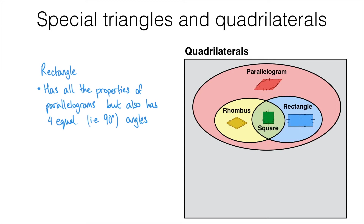Next let's take a look at the rhombus. A rhombus is also a special type of parallelogram — it has all the properties of the parallelogram, but it must have four equal edges, meaning all four sides are the same length. The angles could be different however; we only need the opposite pairs of angles to be equal, but all four don't have to be the same like they do in the rectangle. This shape here is an example of a rhombus.